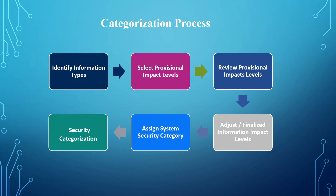The following steps are used as guides to categorize an information system: first, identify the information types; second, select the provisional impact levels; third, review the provisional impact levels; fourth, adjust or analyze information impact levels; fifth, assign the system security category; and sixth, determine the security categorization based on the high watermark.